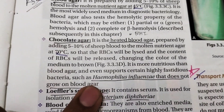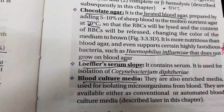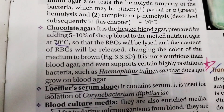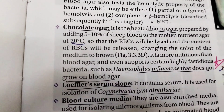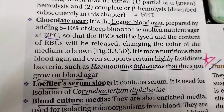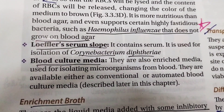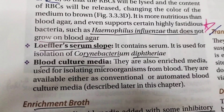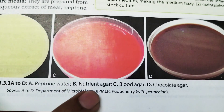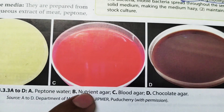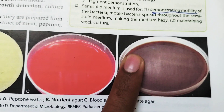Haemophilus influenzae does not grow on blood agar because it requires factors like Factor 5 and Factor 10, which are present inside the RBCs. When we heat the blood agar, the constituents inside the blood come out, and Haemophilus influenzae can then utilize those factors and promote its growth. Loeffler's serum slope is used for Corynebacterium diphtheriae. You can see blood agar is nutrient agar with 5 to 10% sheep blood, and chocolate agar is blood agar that has been heated.